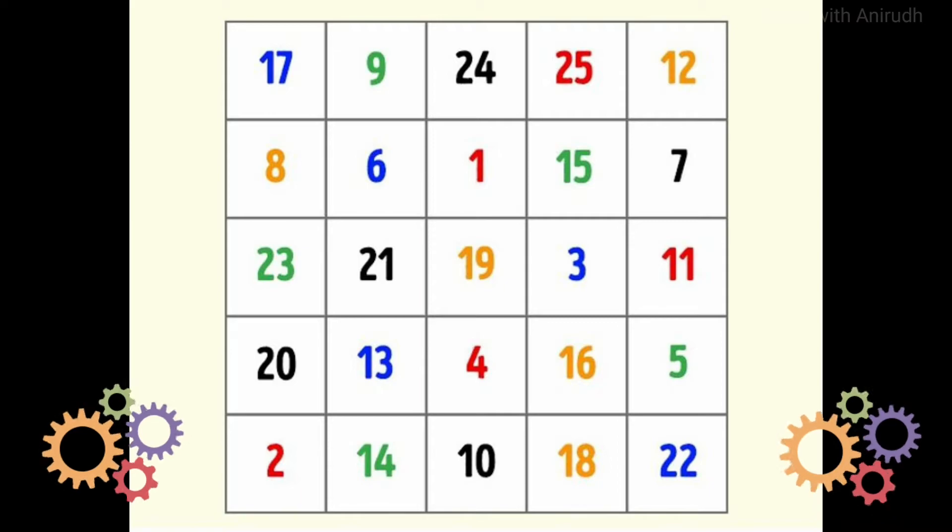So, start from 1, go to 2, 3, and so on until 25. You have to find the numbers in ascending order.